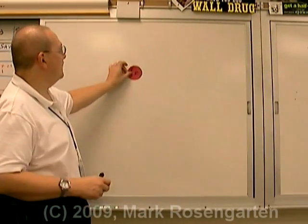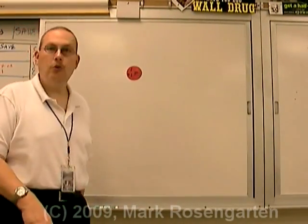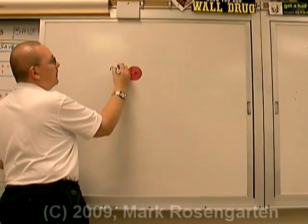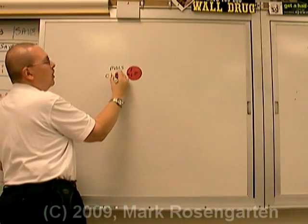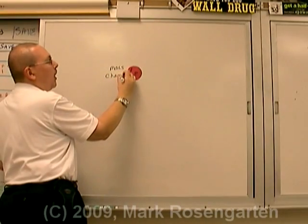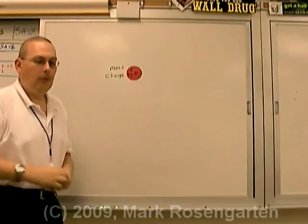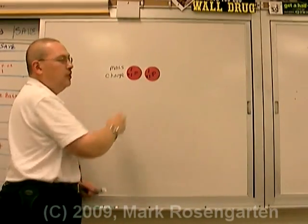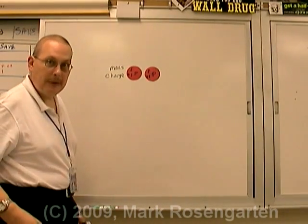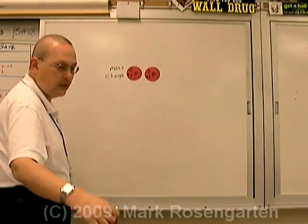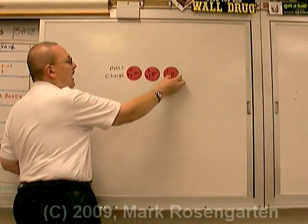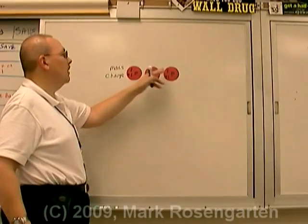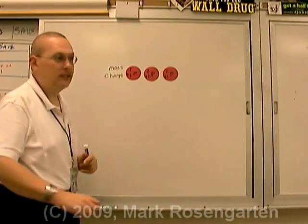First of all we have the positive protons. Each proton has a mass of one and a charge of plus one. Therefore two protons would have a combined charge of plus two and a mass of two atomic mass units. Three protons would have a total combined charge of plus three and a mass of three atomic mass units.